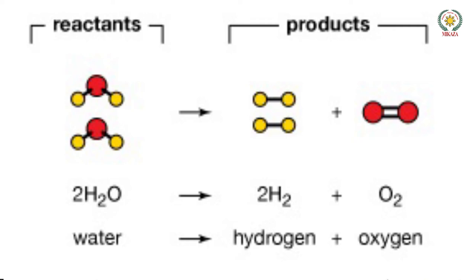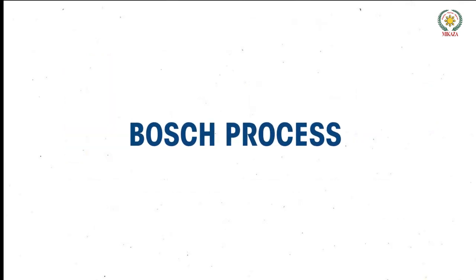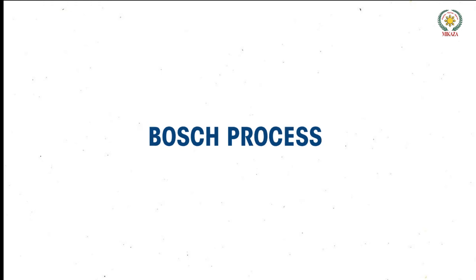Till now we have studied one process, that is electrolysis of water. Now let's study the second process through which hydrogen is produced in industries, which is called the Bosch process. So we are going to study the Bosch process.